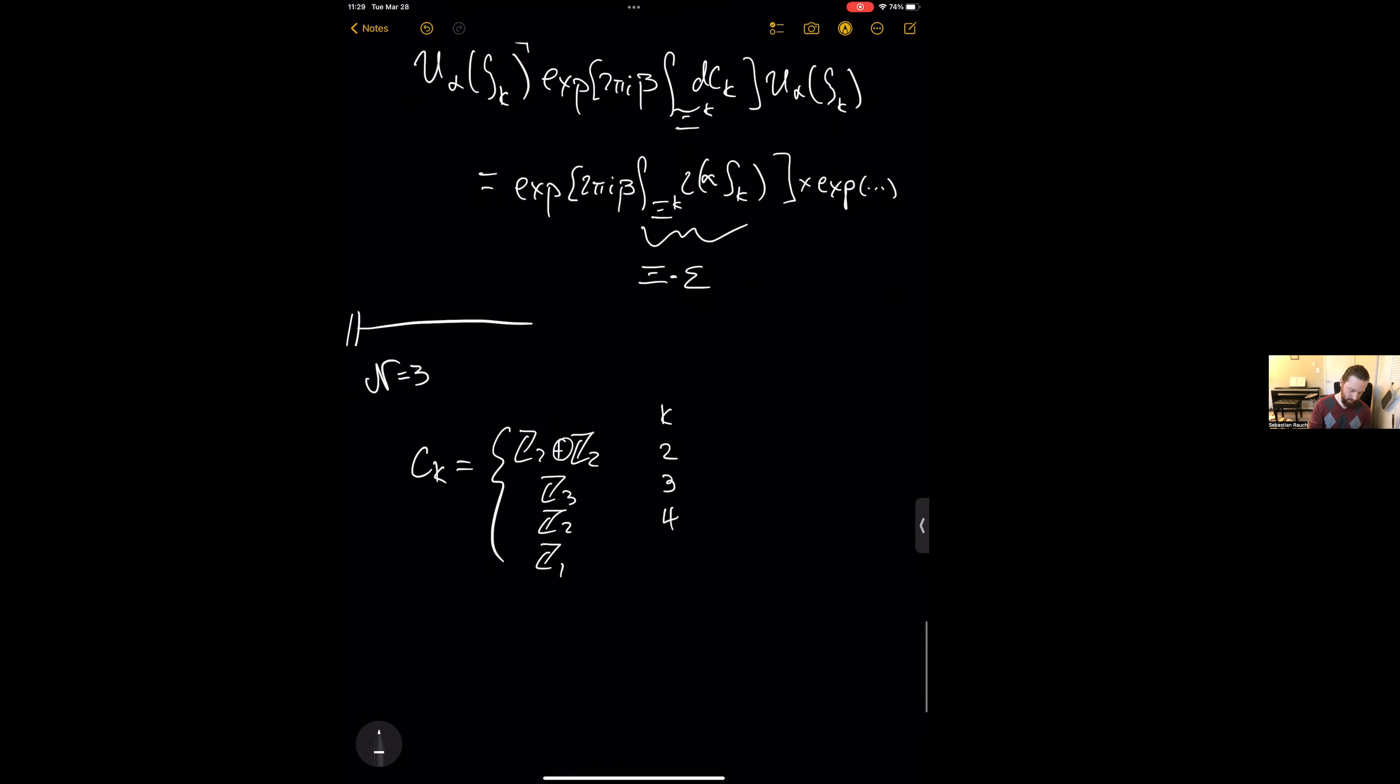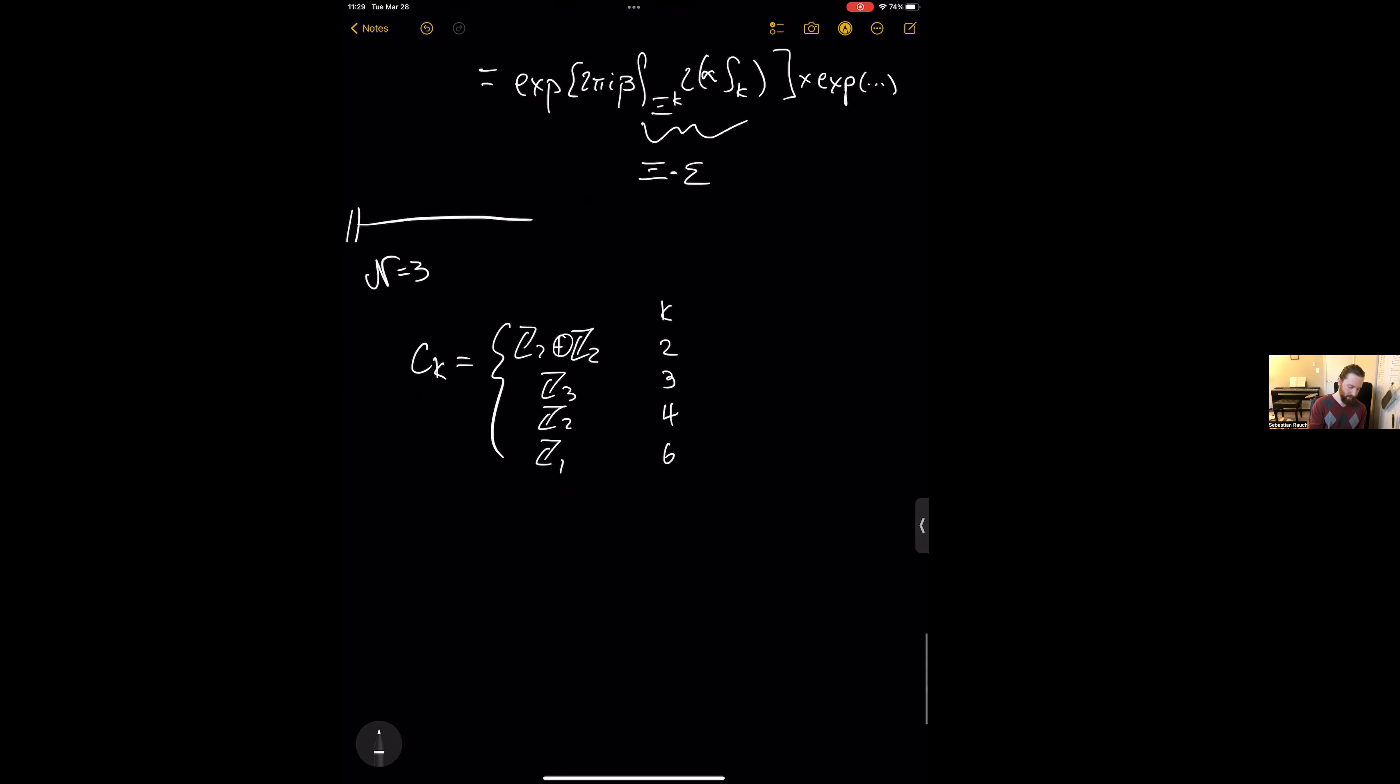Which is given as such. So we see that it's just this nice small group. We see that K equals two is interesting because the doublets actually split into their components. That's what the Z2 plus Z2 is telling us. And then otherwise we just have that these are these nice cyclic groups.